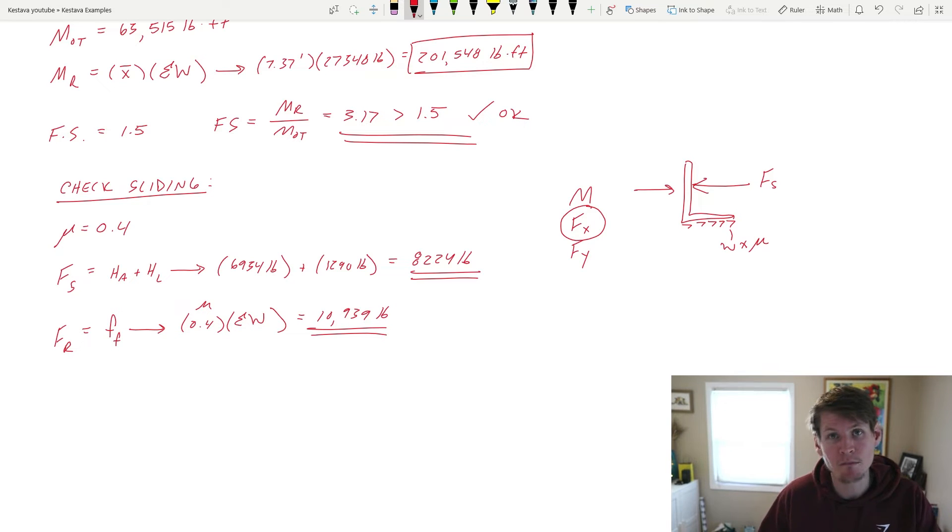Well, it's greater than F sub S, but additionally, we also have to include a factor of safety per the IBC of 1.5. Factor of safety equals FR over FS. And that gets us 1.33. So that is less than 1.5. So we are actually no good.